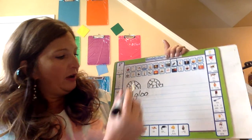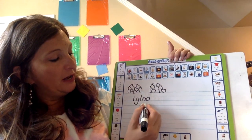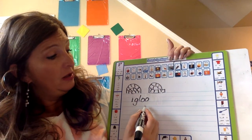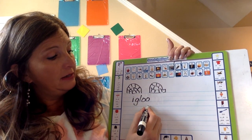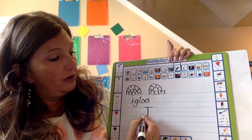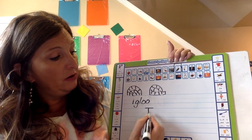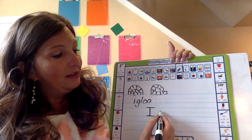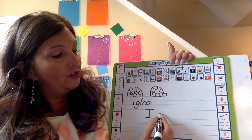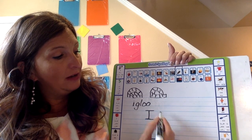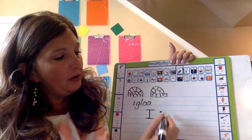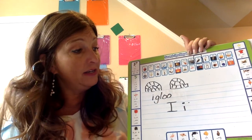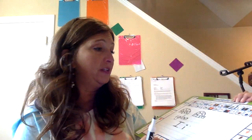Let's take a look at writing the letter I. I'm going to write it down here on this line. Remember, we always start to write our letters from the top down. Capital I goes like this — top down — and then both the top and bottom get a line across. This is a capital I. This is a lowercase I — it just pulls down, and then you get to make a little dot. I'd like for you to make 10 capital I's and 10 lowercase I's after you're finished with this video.